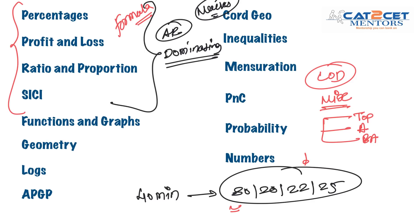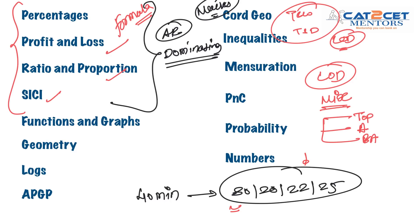If a question is twisted, it will still fall within the formula domain. Focus on percentages — percentages cut through everything: Profit and Loss, Ratio and Proportion, SICI all connect back to percentages. Time and Work and THD are time-consuming — leave them for now. Percentage, Profit and Loss, and SICI give you short questions every year. Look at the 2017 paper — but do so concept by concept, topic by topic, not just for the sake of watching.